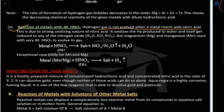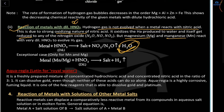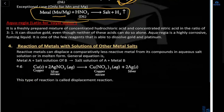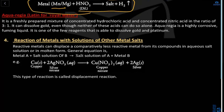Hydrogen gas will never evolve when a metal reacts with HNO₃ because HNO₃ is a very strong oxidizing agent — it oxidizes the H₂ produced to water and itself gets reduced, so H₂O forms instead of H₂. Exception: magnesium and manganese react with HNO₃ to evolve H₂ gas.